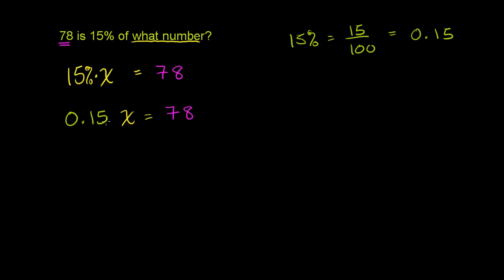And now we can divide both sides of this equation by 0.15 to solve for x. So you divide the left side by 0.15. And I'm literally picking 0.15 to divide both sides, because that's what I have out here in front of the x. So if I'm multiplying something by 0.15 and then I divide it by 0.15, I'll just be left with an x here. That's the whole motivation. If I do it to the left-hand side, I have to do it to the right-hand side. 0.15. These cancel out, and I get x.